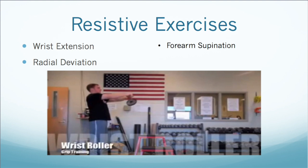Once you have stretched the involved muscles, it is key to strengthen them in the new range so they do not become weak and lengthened. Good directions to work in are wrist extension, radial deviation, and forearm supination, as these are some of the key muscle groups involved in grip strength, which is commonly impaired with radial nerve entrapment. A good example of eccentric and concentric wrist extension is the dowel exercise, as seen here.